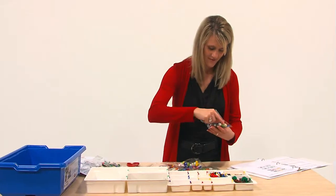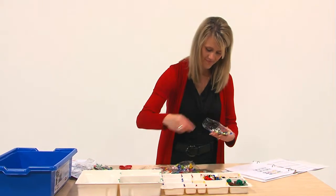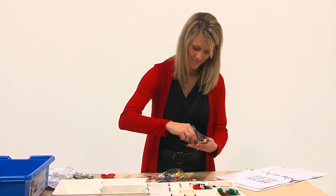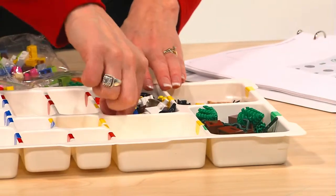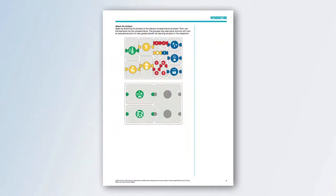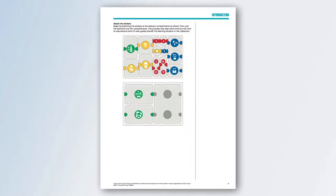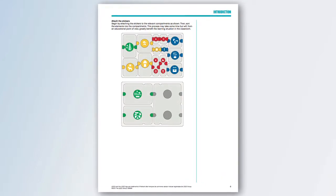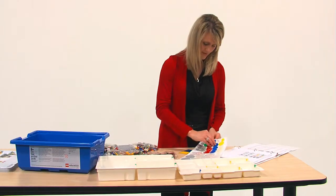The elements of the Story Starter core set can be sorted in many ways — there is no right or wrong approach. However, it is recommended to spend time organizing the elements either in line with the labeling guidelines shown in the curriculum pack introductory materials or according to a system of your own.